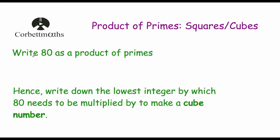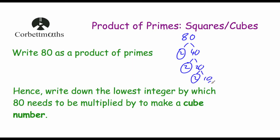We're asked to write 80 as a product of primes. 80 equals 2 times 40; circle the 2. 40 is 2 times 20; 20 is 2 times 10; 10 is 2 times 5 — circle them both. So 80 as a product of primes is 2 times 2 times 2 times 2 times 5, which is 2 to the power of 4 times 5.